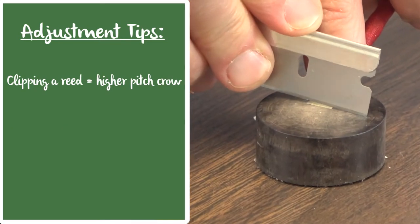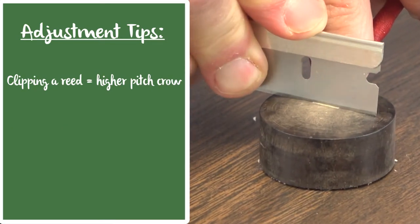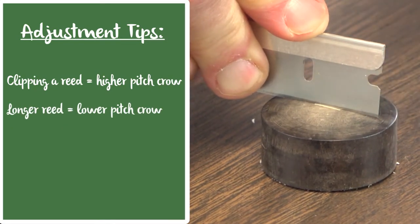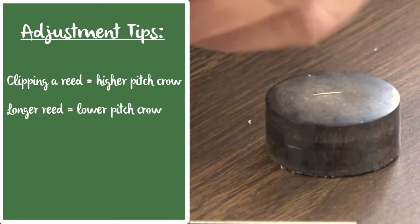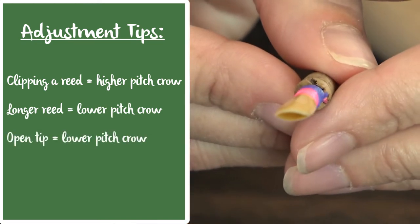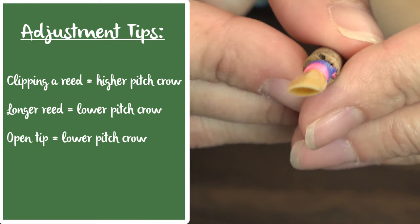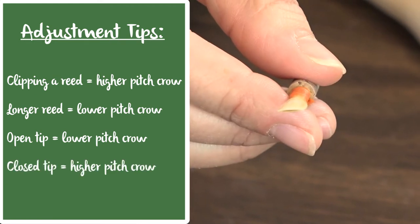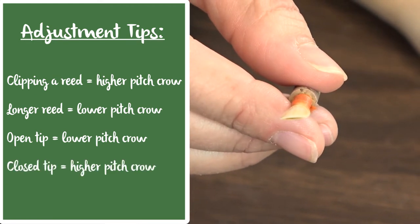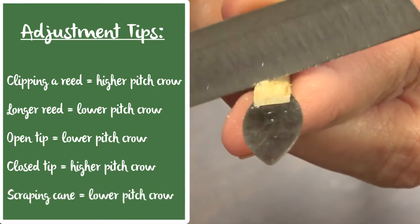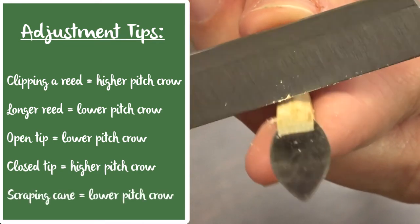Making a reed shorter by clipping it makes the pitch higher. Keeping the reed longer keeps the pitch lower. A reed that is more open will likely be lower in pitch. A reed that is more closed will tend toward a higher pitch. Scraping cane off the reed generally lowers the pitch.